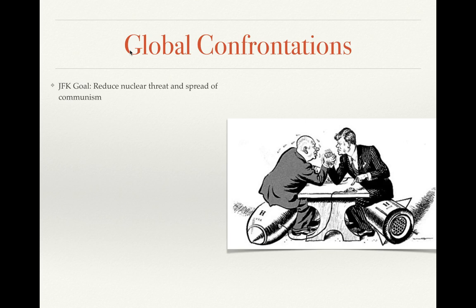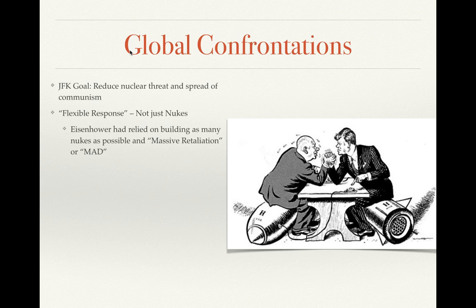JFK's goal was to reduce the nuclear threat and the spread of communism — very similar to what we saw under Eisenhower throughout the 50s. However, there's a big difference: Kennedy wants what he calls flexible response, meaning not just nuclear weapons as a way to respond to any conflict. Eisenhower's strategy was to build up nuclear weapons, so that any war would result in massive retaliation, or MAD — Mutually Assured Destruction — acting as a deterrent. Kennedy felt that was a very dangerous policy and wanted to open it up to other options.